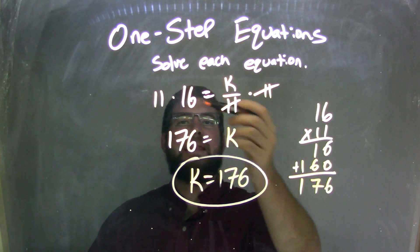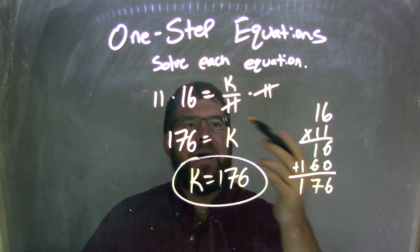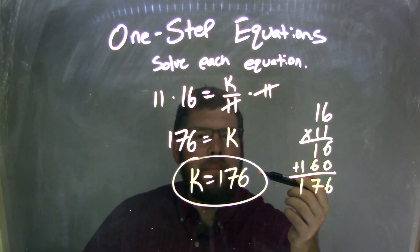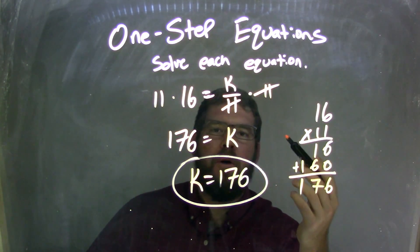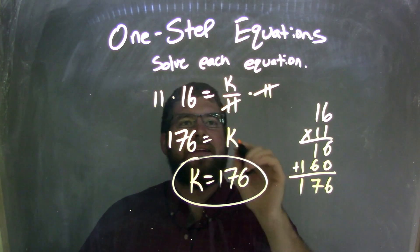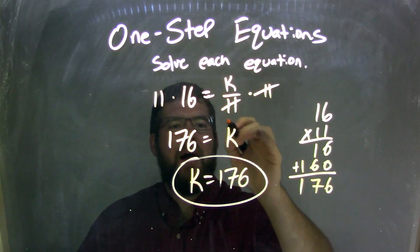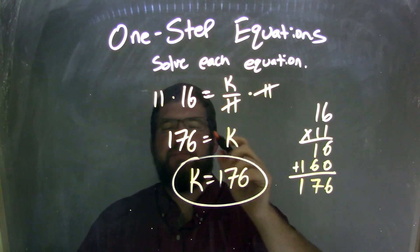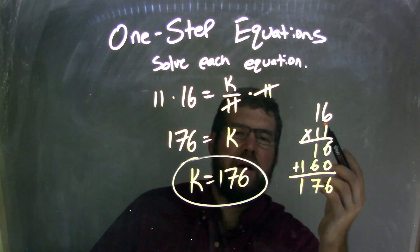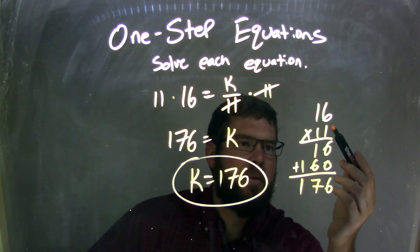Let's recap. We started with 16 equals k over 11. We multiplied by 11 to both sides because that was the opposite of the division. Multiplying 11 to both sides cancels out the 11 in this denominator, leaving us just with k. Now, 11 times 16, I multiply that over here using the traditional method.